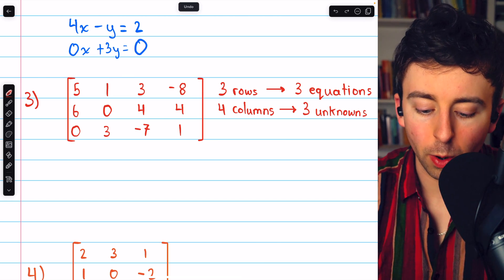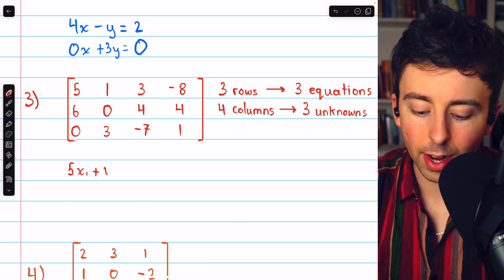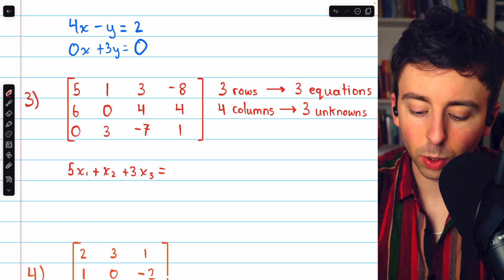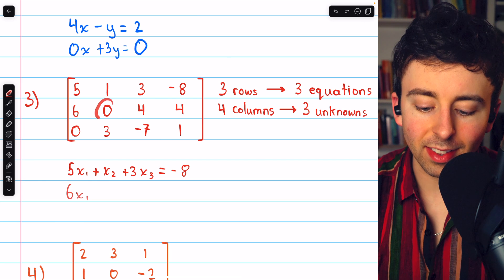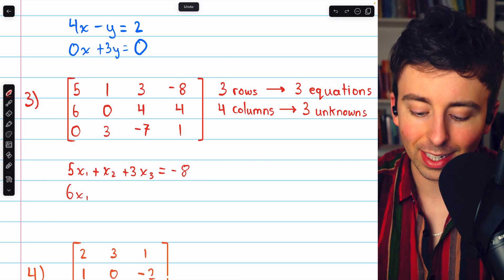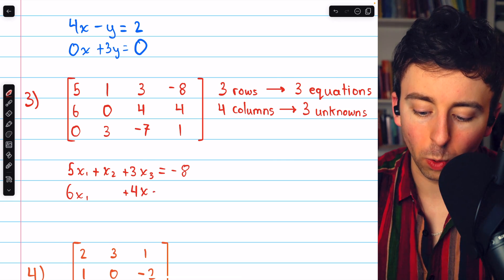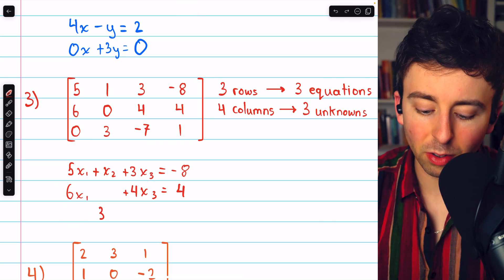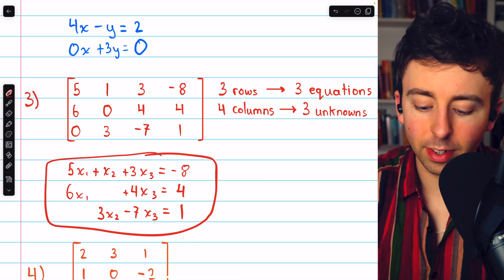Then, from the first row, we have that 5X1 plus 1X2 plus 3X3 must equal negative 8, and so on for subsequent rows. Since this entry is a 0, we can just leave blank space there representing the lack of an X2 while keeping our equations all organized. Same thing here, there are no X1s, we'll just leave blank space so that everything stays nicely aligned. And there is our system.